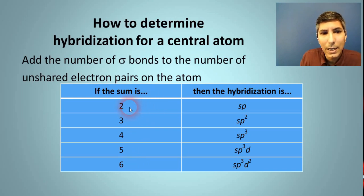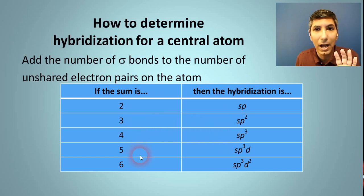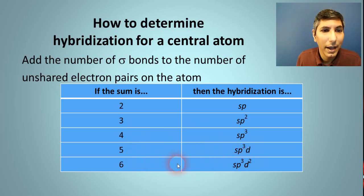But if that number ends up being 2, then we say the hybridization is sp. One part s, one part p. If the sum ends up being 3, the hybridization is sp2. If the sum is 4, then the hybridization is sp3. If it happens to be 5, then we go up to sp3d hybridization. And if the sum happens to be 6, we call it sp3d2 hybridization.